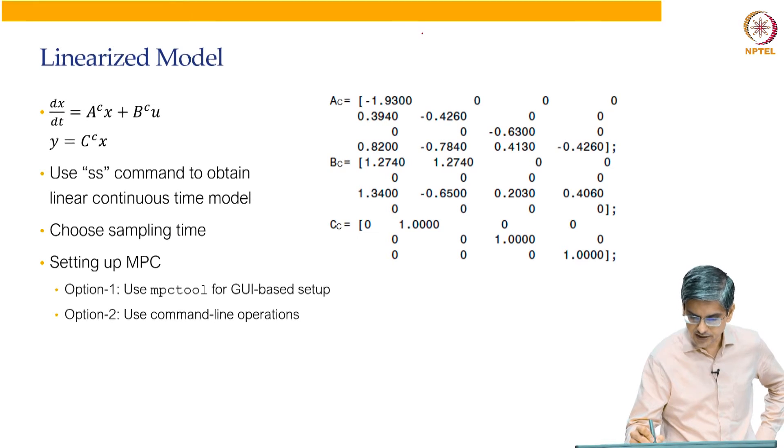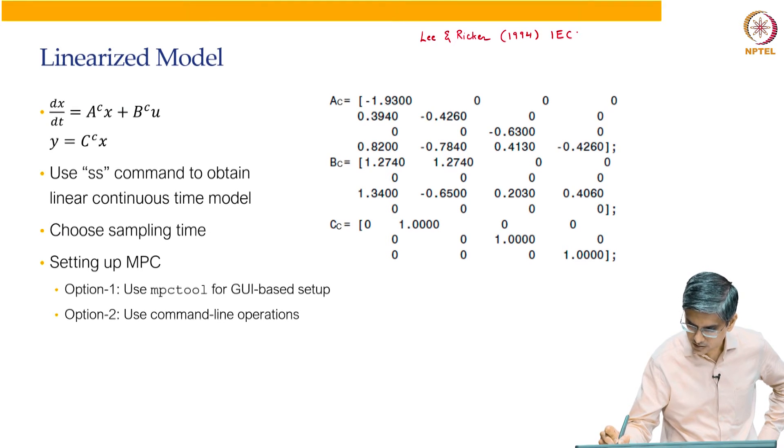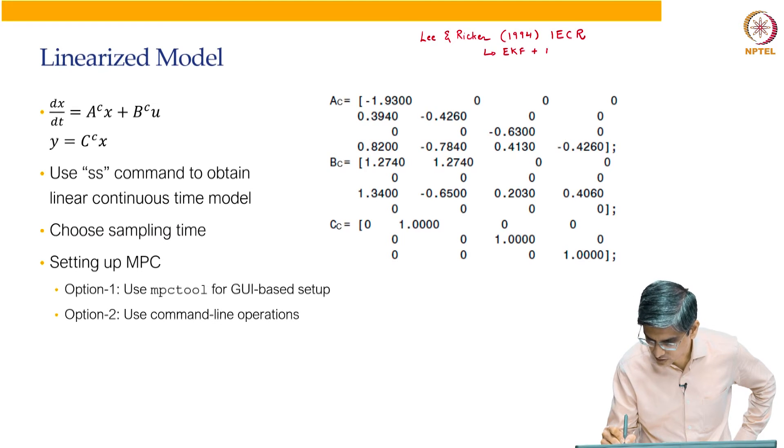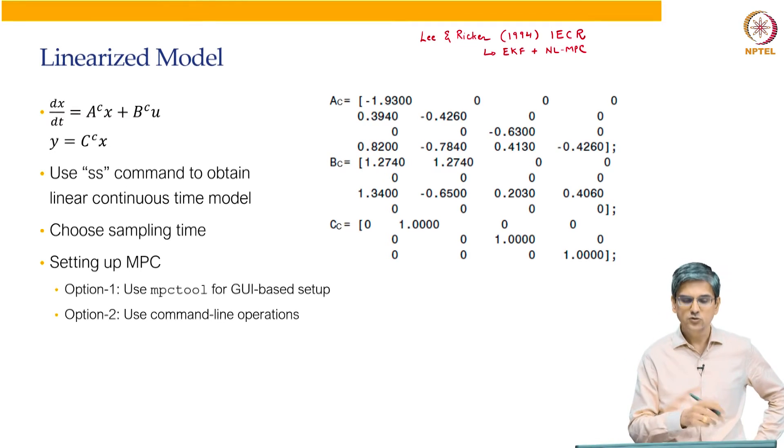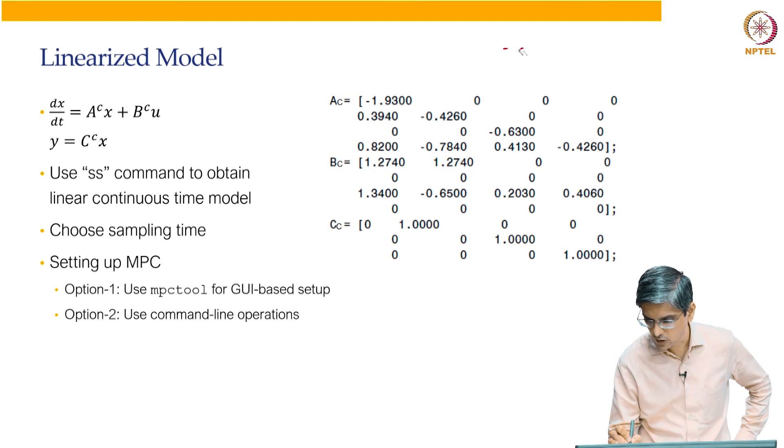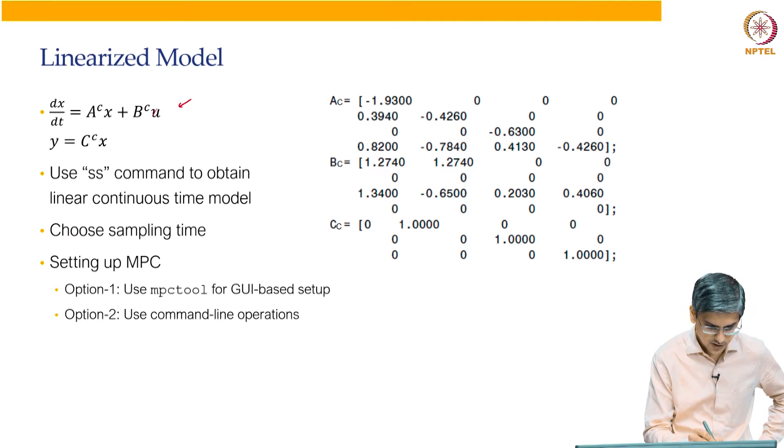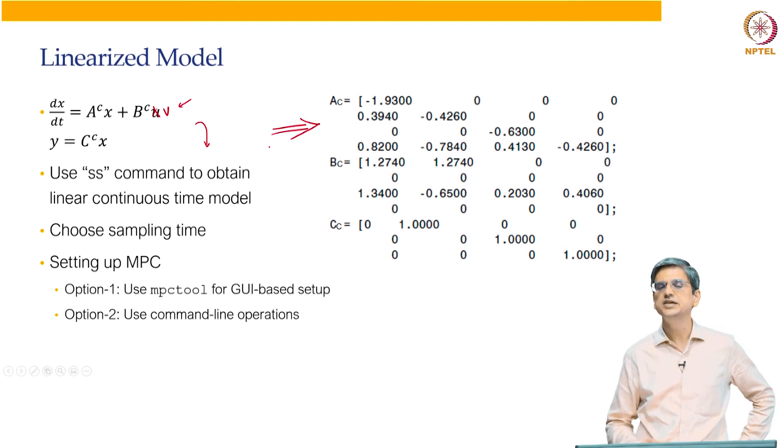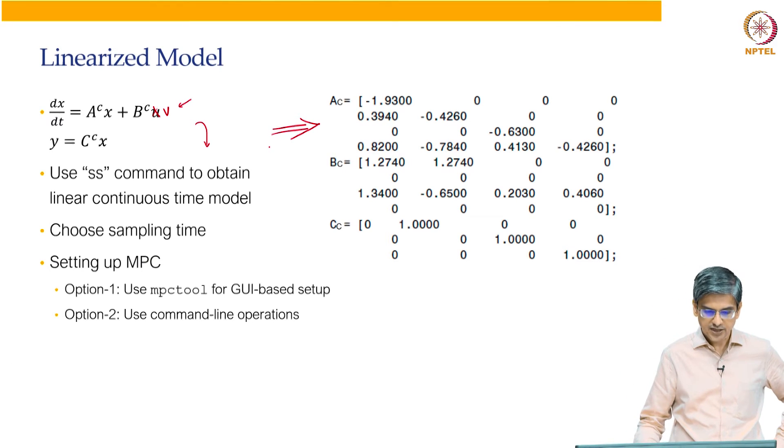So there is a non-linear model for this system. The non-linear model, if you are interested, it is in the paper by Lee and Ricker in Industrial and Engineering Chemistry Research. They talk about EKF plus non-linear MPC applied to the same problem. You can read this paper and look at the non-linear model. You can then linearize this model, and when you linearize this model you are going to get these linear matrices AC, BC, CC. You can then use the SS command in order to obtain a linear continuous time model.